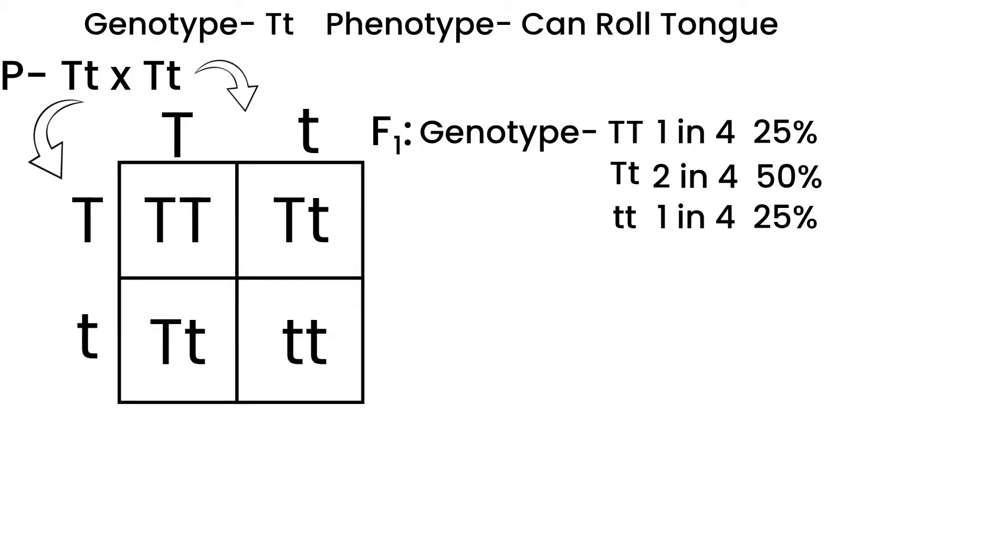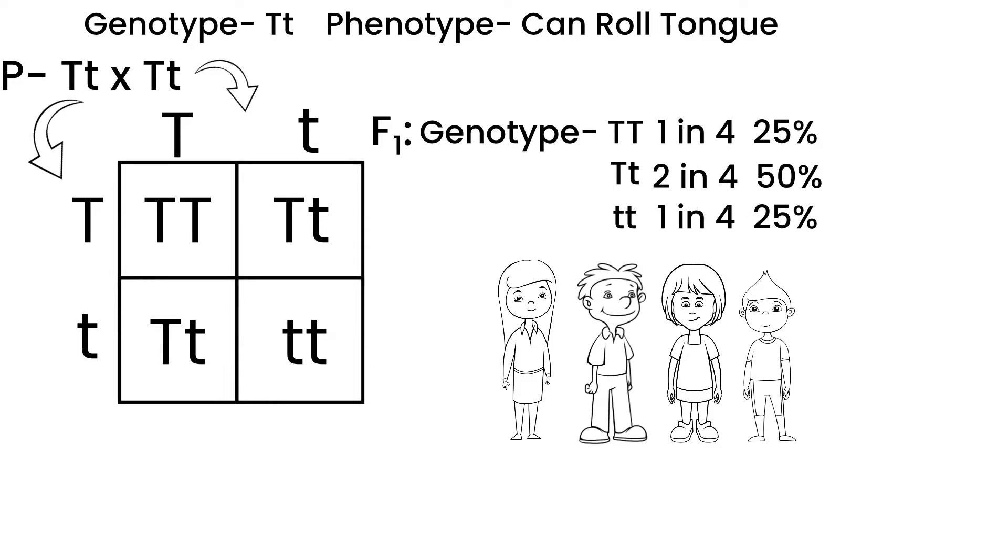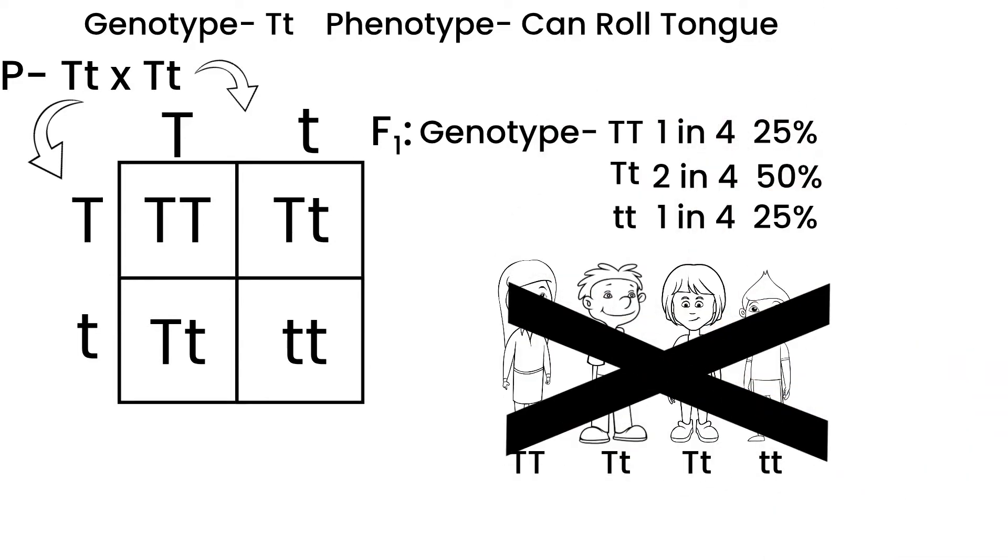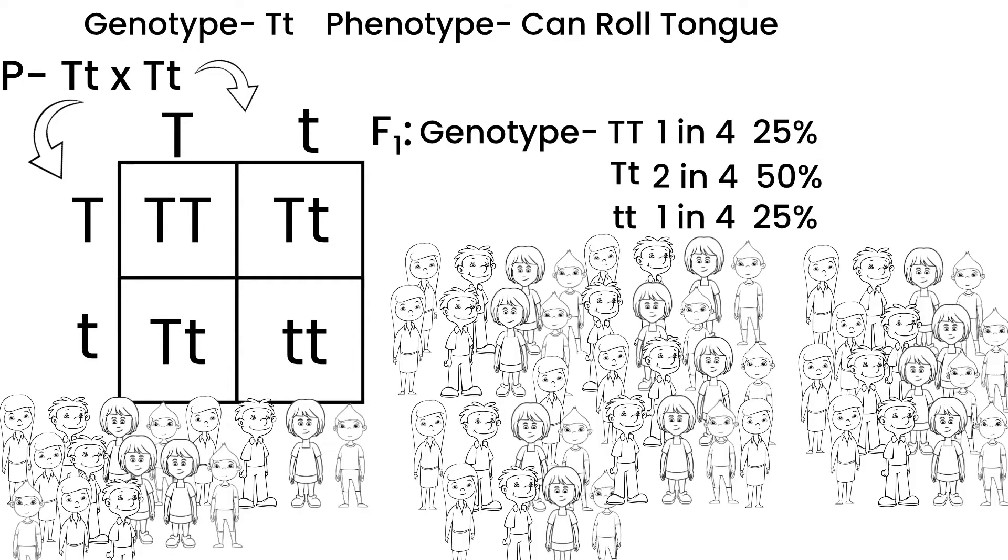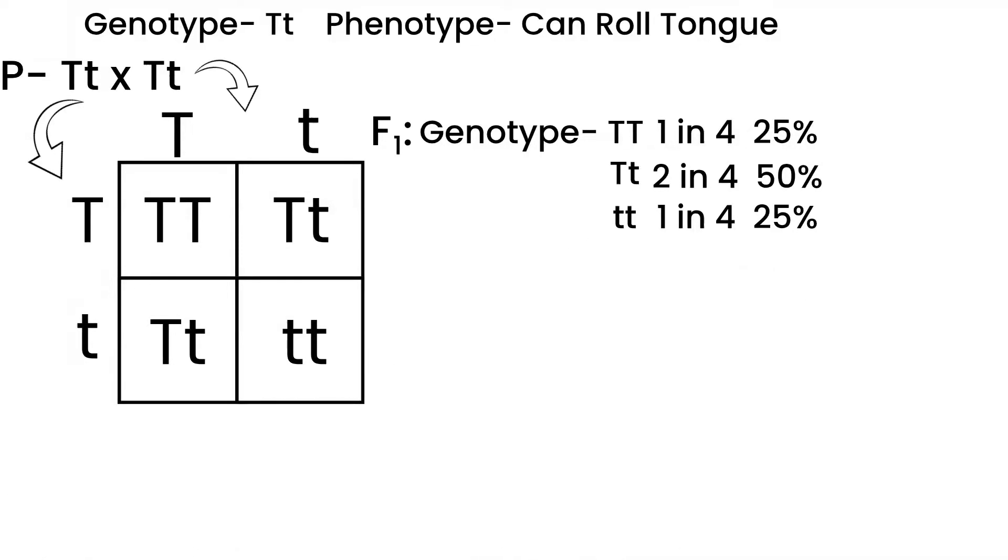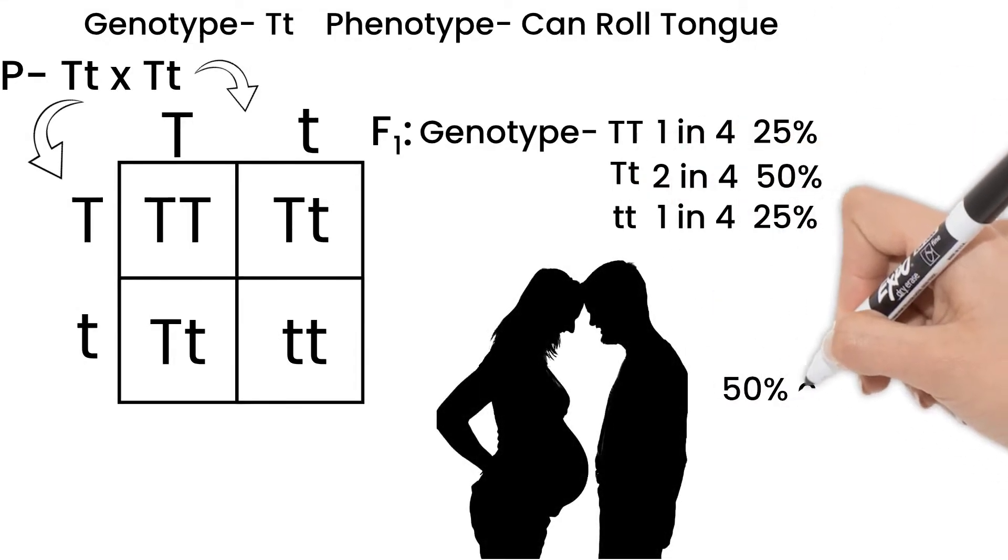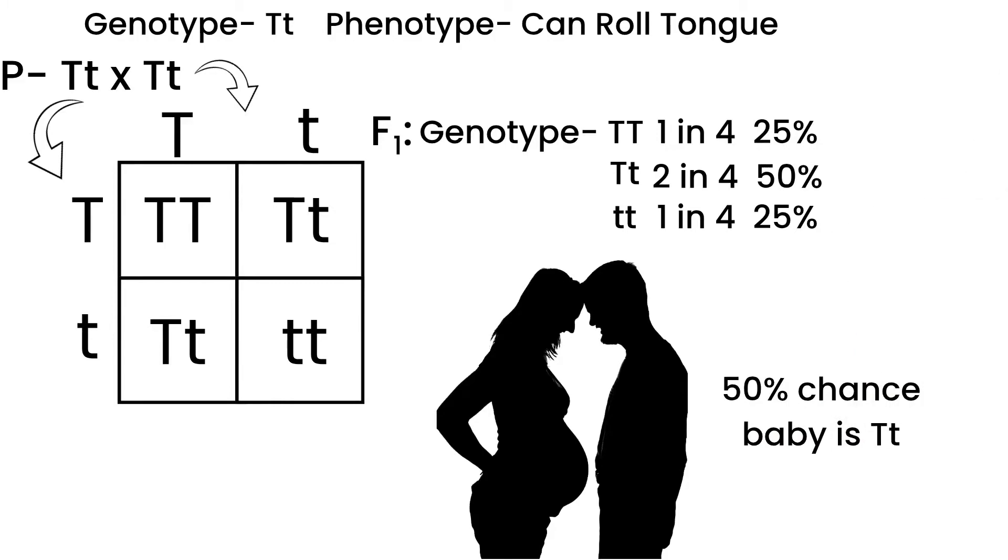Now this is not saying that they have four kids with these genotypes. It is the possible genotypes their kids might have. If these two parents were to have lots of kids, we would see this pattern. Or we could also read this as the chances of what a child might be. Every time the wife is pregnant, there is a 50% chance that the baby will be heterozygous for rolling their tongue.